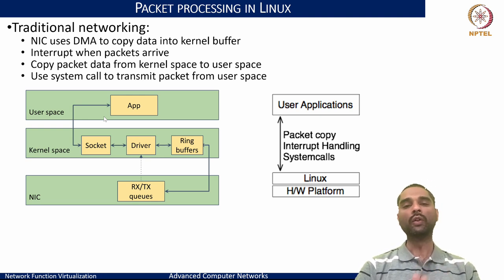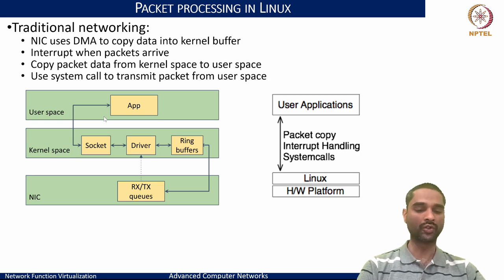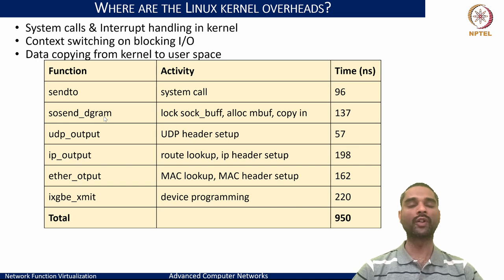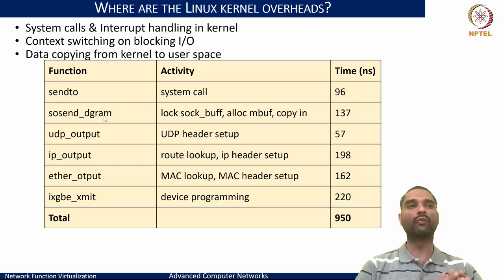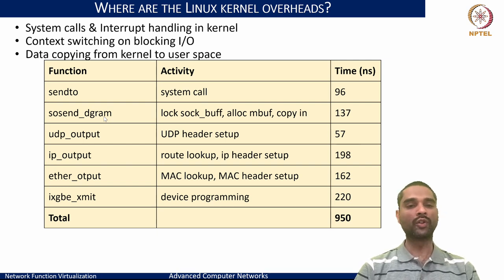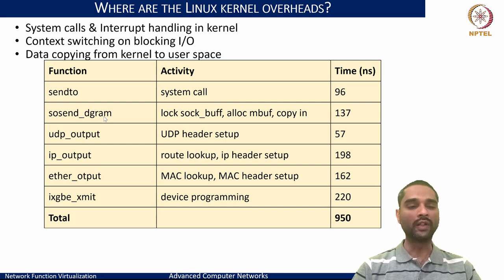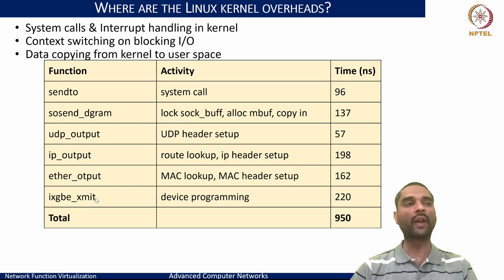We can measure these overheads using strace or kernel tracing and profiling of Linux network stack functions. For example, when a socket sends a packet using the sendto() system call, we can trace how long it takes until the packet reaches the NIC interface and the ixgb driver initiates the ixgb_transmit call to send it out on the link.